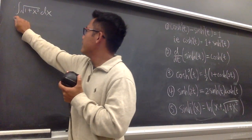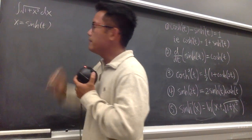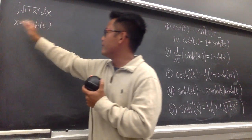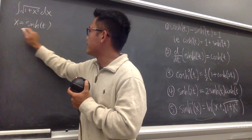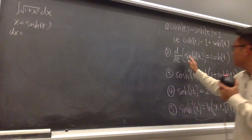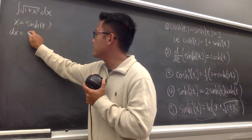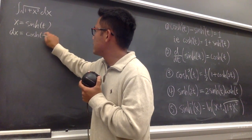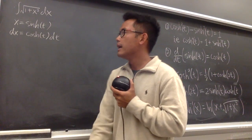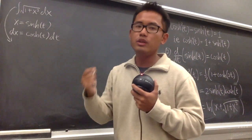Since we have 1 plus x squared, let's set x equal to sinh(t). When doing the integral, we differentiate both sides to get dx. So dx equals the derivative of sinh(t), which is cosh(t), times dt.